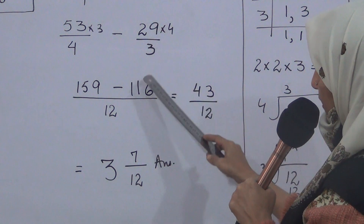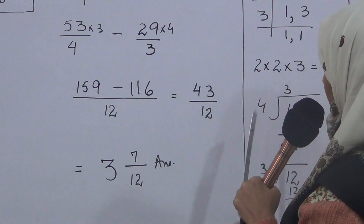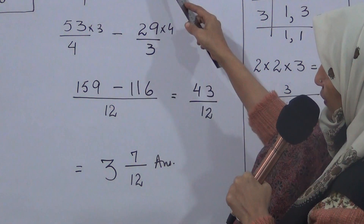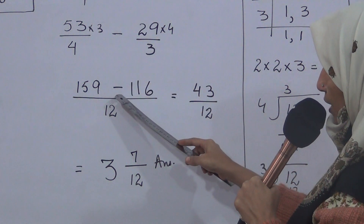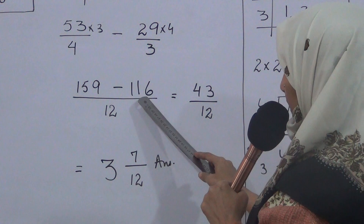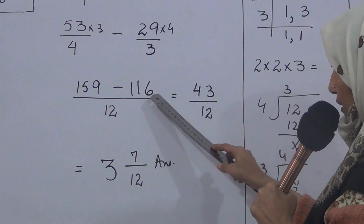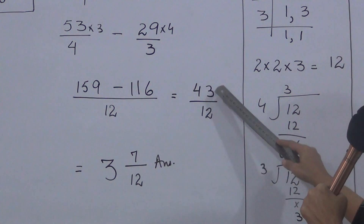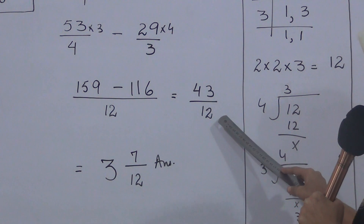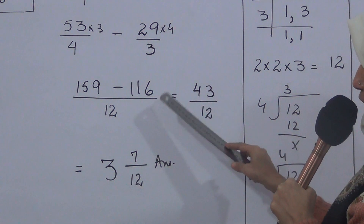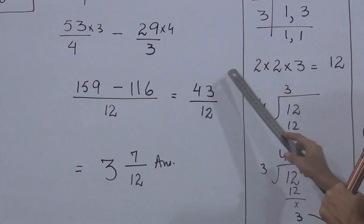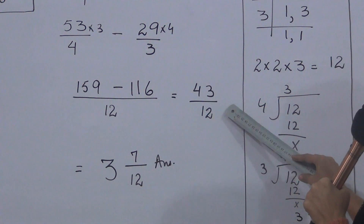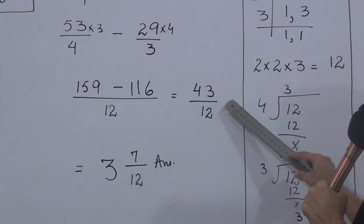You can do the multiplication in the rough column. Since minus is given in the question, the sign remains minus. So 159 minus 116 equals 43. The answer is 43 upon 12 as the subtracted value. Now we check if 43/12 can be further simplified. If it can, we simplify; if not, this is the answer.